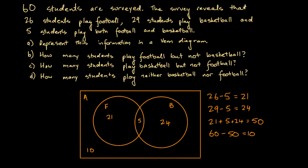We've now represented all the information in the Venn diagram. It's always good to double-check by adding up all the numbers: 10 plus 21 is 31, 31 plus 5 is 36, and 24 plus 36 is 60. Sure enough, the total comes to 60, confirming the diagram is correct.